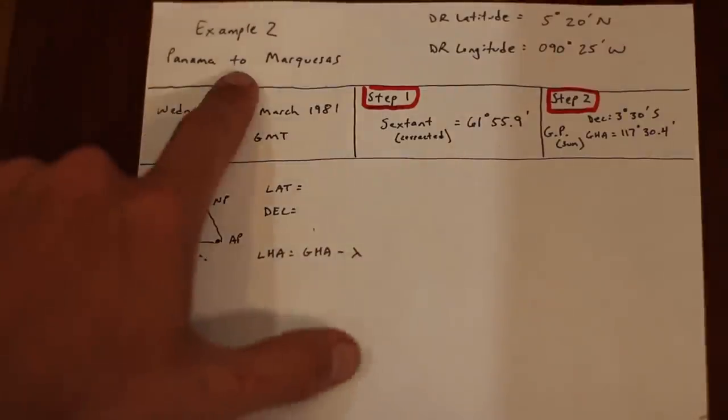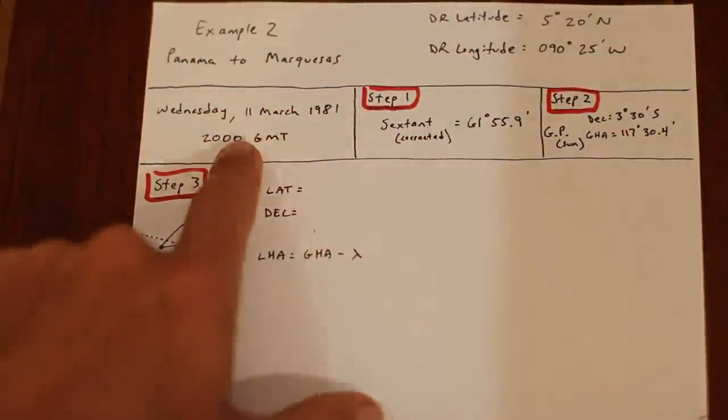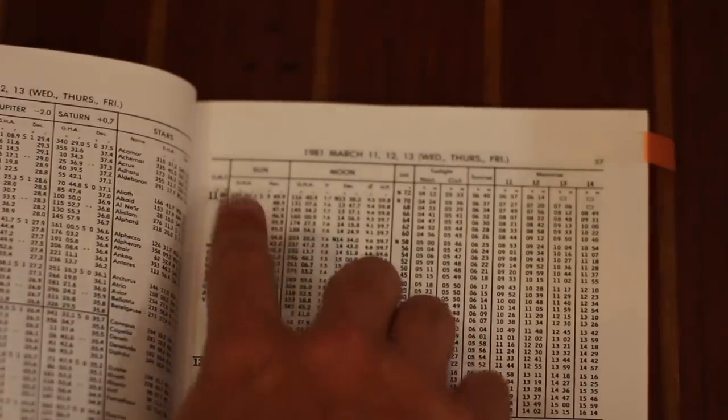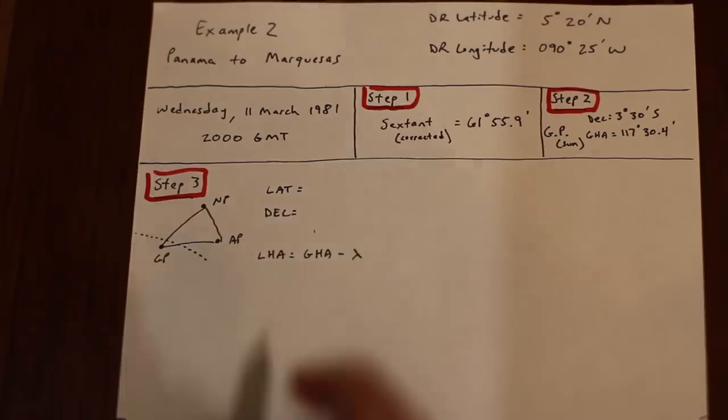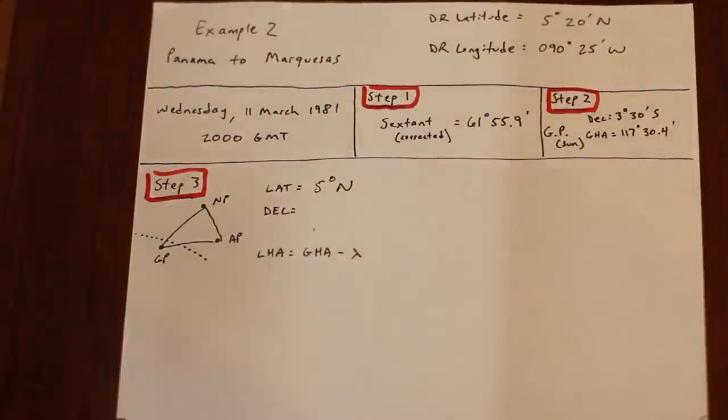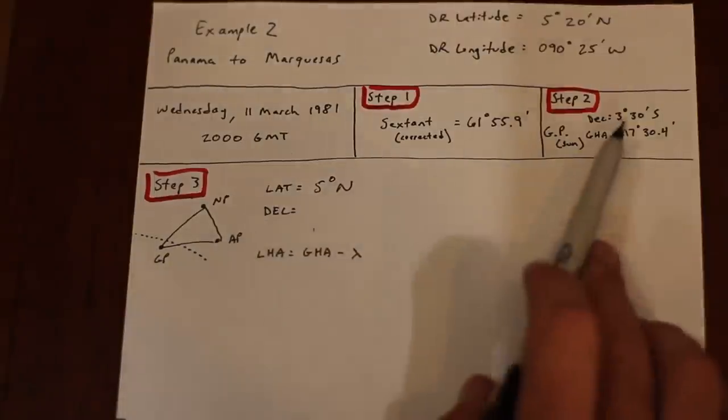Let's move on to the next example. In this example, we're bound for the Marquesas Islands, and we'll increase the complexity a bit. Again, I'll solve steps one and two for you to save some time, and we'll move right on to step three. Latitude. Again, we pick the nearest whole latitude, noting that the assumed position is arbitrary. It just has to be within about 30 arc minutes, and otherwise it can be anything we want.